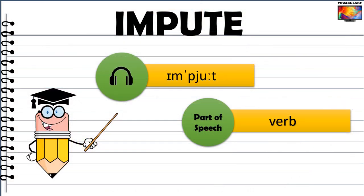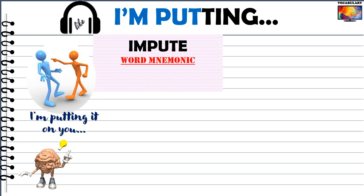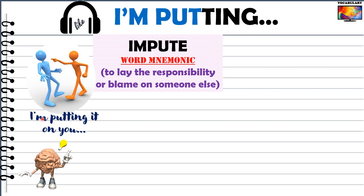Our first word for today's lesson is impute, and it's a verb. An easy memory clue for this word's definition is hidden in the word itself. Read impute as 'I am putting' — I am putting it on you. If I lay the responsibility or blame of something on you, I am imputing it to you.